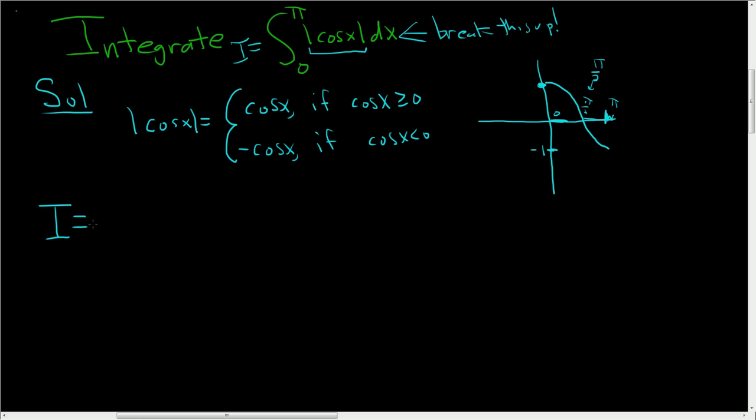So i is equal to, well, first we'll go from 0 to pi over 2. So 0 to pi over 2. And we discussed that from 0 to pi over 2, it's going to be positive or 0. So let's write that as just cosine x, right?